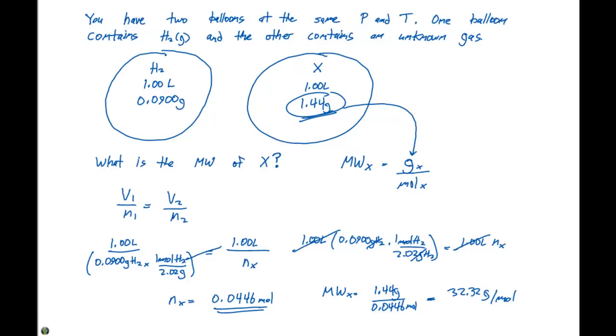So if we have 32.32 grams per mole, we could say that our X could be one of two gases. It could be O2 gas or sulfur as a gas. Because if you look at the periodic table, the molecular weight of sulfur is going to be very close to 32 grams per mole, as well as the oxygen—O2 would be 16 times 2, or 32 grams per mole. So the molecular weight of the unknown gas is going to be 32.32 grams per mole, which would give it an identity of either oxygen or sulfur.